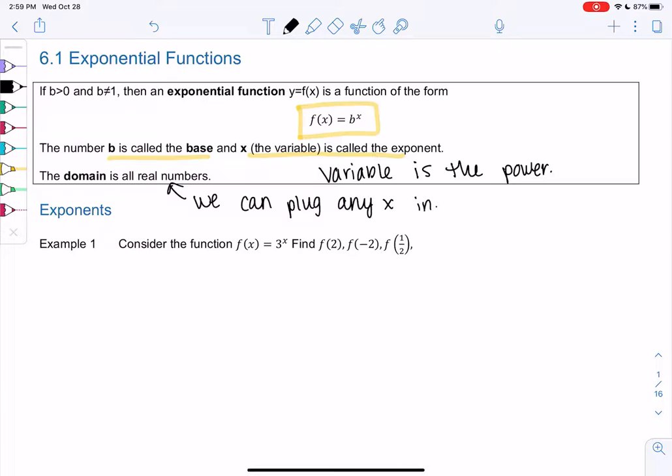Let's check out one example. We have f of x equals 3 to the x and we want to find f of 2. So f of 2 means we get 3 to the second power, which is 9. 3 squared is 9, that's coming from 3 times 3.